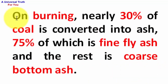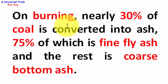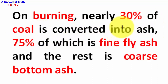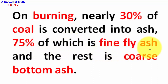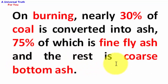On burning, nearly 30% of coal is converted into ash, 75% of which is fine fly ash and the rest is coarse bottom ash.